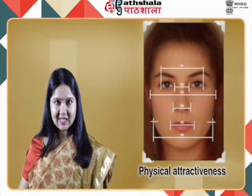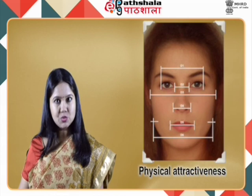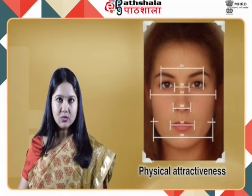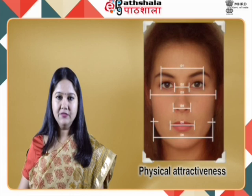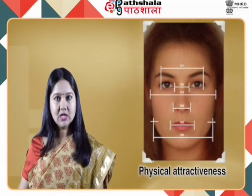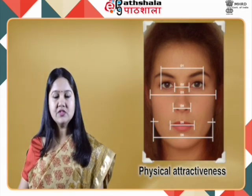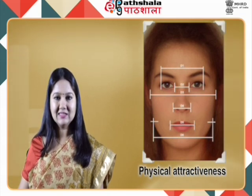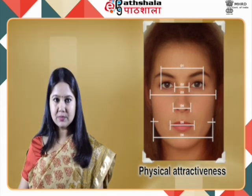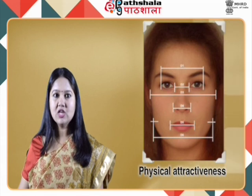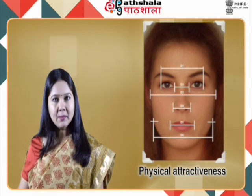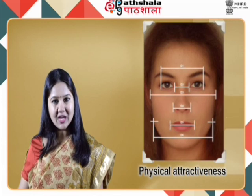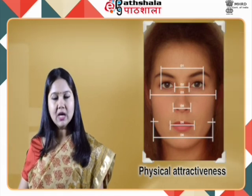One approach to understanding this is to identify individuals who are rated as attractive and find out what they have in common. Cunningham et al. conducted a study on people from four different ethnic cultural groups and 13 countries to rate the facial attractiveness of photographed women of different races, and found a high degree of consensus on who was considered beautiful. The researchers found a preference for large, wide-set eyes, a small nose and chin, and prominent cheekbones.